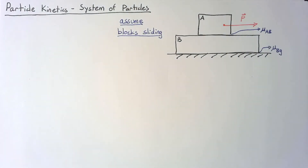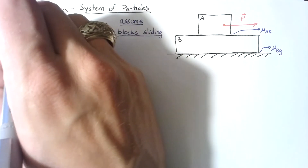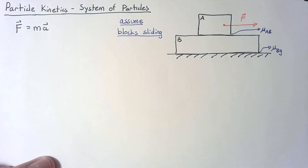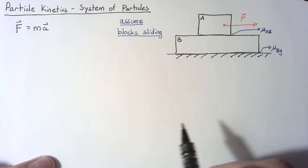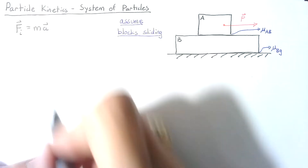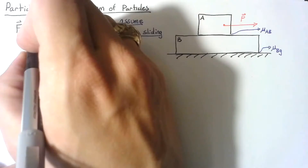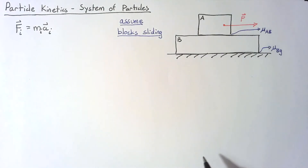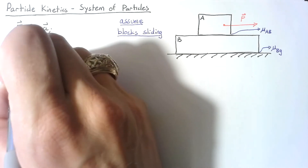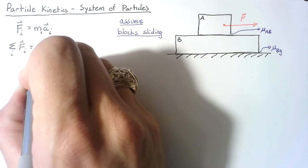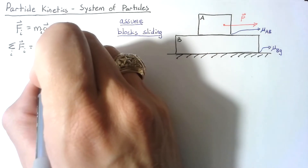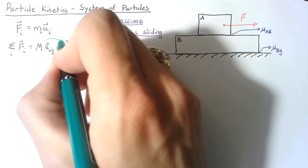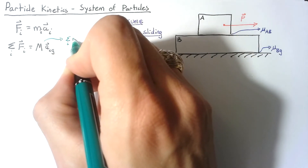Now let's look at the kinetic equation, which is simply the sum of the forces equal to mass times acceleration. We have two separate blocks, so we'll say that the force applied to block I — where I can be anything — is equal to the mass of block I multiplied by the acceleration of block I. This gives us two separate equations. We can also look at the sum of the forces over all of the blocks, which gives us the total system mass multiplied by the acceleration of the center of gravity. This M is simply equal to the sum over I of all our particle masses.